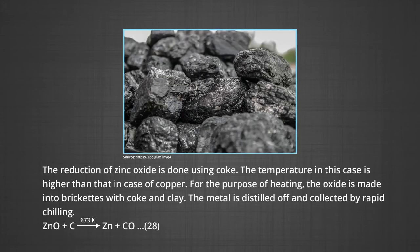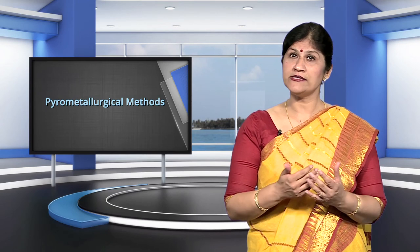Now let us understand the extraction of zinc from zinc oxide. The reduction of zinc oxide is done using coke, and the temperature in this case is higher than that in the case of copper. For the purpose of heating, the oxide is made into briquets with coke and clay. Zinc oxide reacts with coke at 673 K to form zinc and carbon monoxide. The metal is distilled off and collected by rapid chilling. These were the pyrometallurgical methods of obtaining metal from their oxides.